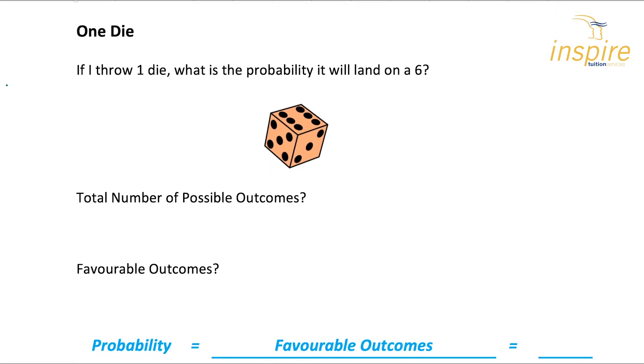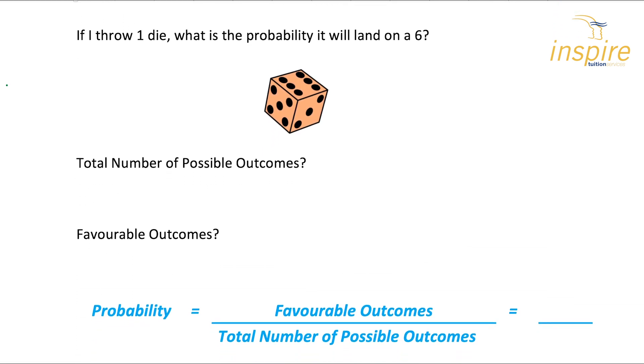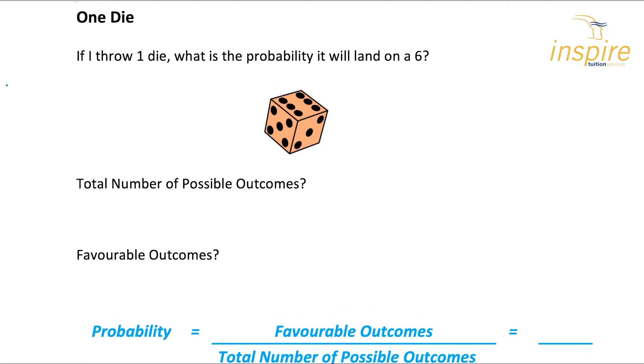So let's have a look first at one die. Very simple example here. If I throw one die, what's the probability it will land on a six? So looking at that, first let's look at the total number of possible outcomes. It's always useful to work that out first, because it makes your understanding a little bit better and you can get the answer much quicker with less mistakes. So total number of outcomes - it's a dice, it has six faces. So there are six possible outcomes here.